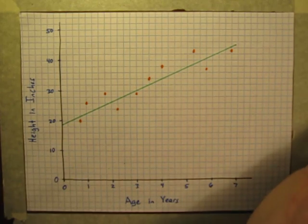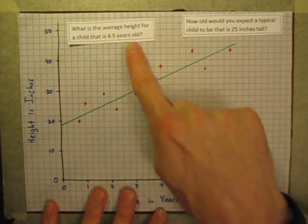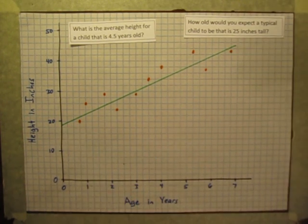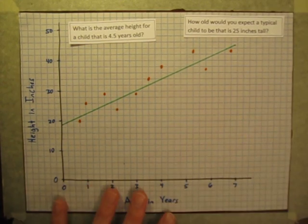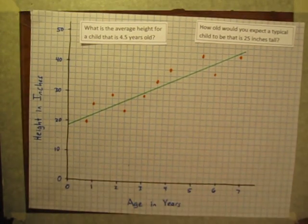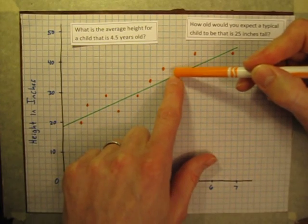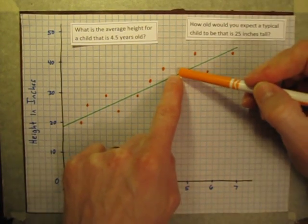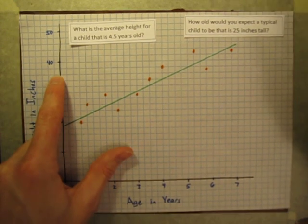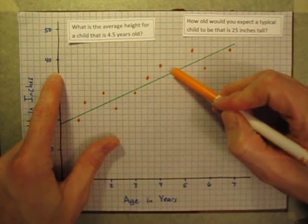And now I'm ready to start answering questions like these. What's the average height of a child that's 4.5 years old? And how tall would a typical child be that's 25 inches tall? For this, now I can use my line of best fit as a linear model. This line is going to represent average growth for children of various ages. And so, if we have a child that's 4.5 years old, I go to 4.5 on my x-axis. And I can go straight up until I get to my line of best fit. And that point represents the average height of a child that's 4.5 years old. And if I scoot over, it looks like that would be about 36 inches tall. And again, I made up this data, so that's probably not actually accurate. But according to this line that I drew, a 4.5 year old would be about 36 inches tall.